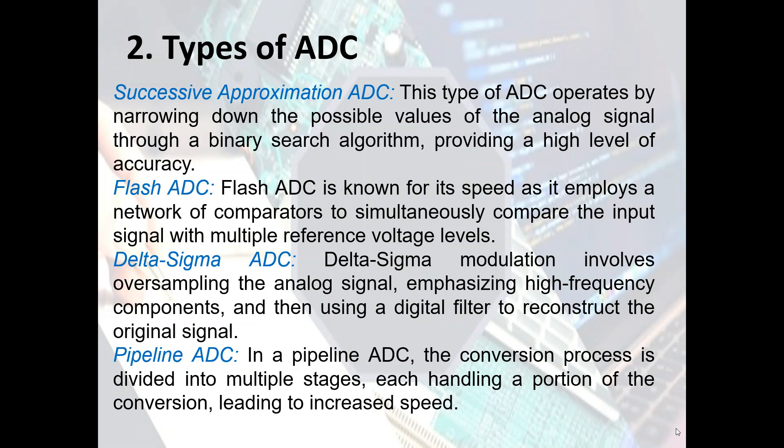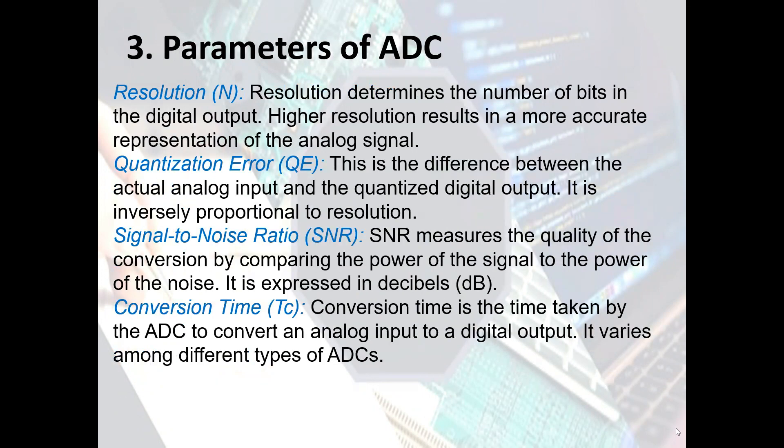The delta-sigma ADC involves oversampling the analog signal, emphasizing high-frequency components, and then using a digital filter to reconstruct the original signal. In the pipeline ADC, the conversion process is divided into multiple stages, each handling a portion of the conversion, leading to increased speed.